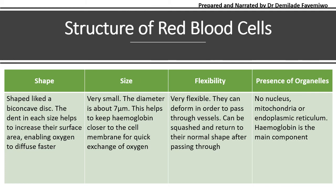In terms of organelles, red blood cells do not have a nucleus, mitochondria, or endoplasmic reticulum. The main ingredient they carry is hemoglobin, and you will see why hemoglobin is so important as we continue.